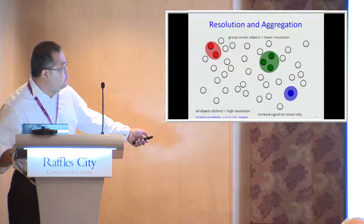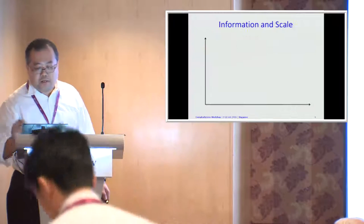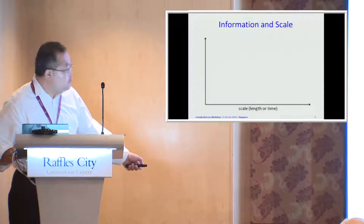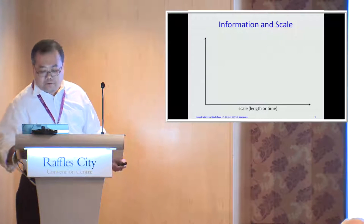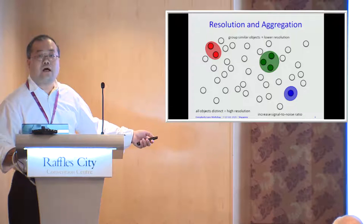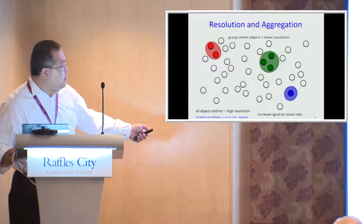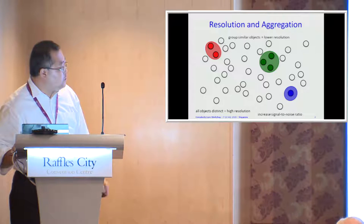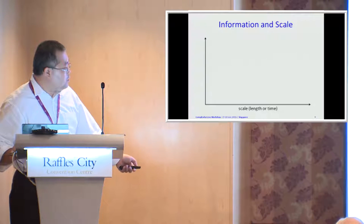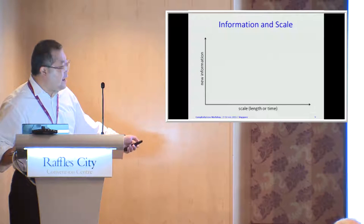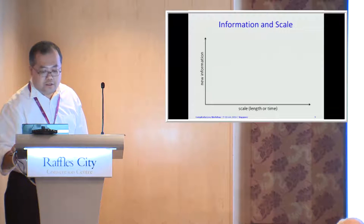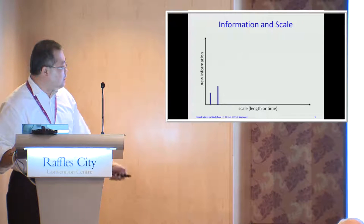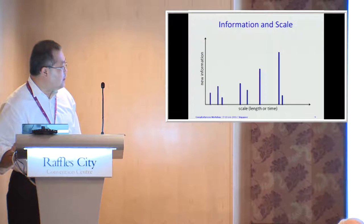If you repeat this aggregation process at higher and higher scales, you can plot a graph where the x-axis is scale — either length scale or time scale. A length scale means aggregating circles that are spatially closer; a time scale means grouping according to time evolution windows. The y-axis represents the emergence of new information. So you see new information appearing at one microscopic scale, then later at another scale, and so on — new information organization appearing at specific length and time scales.